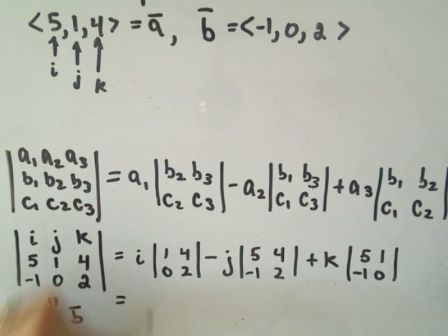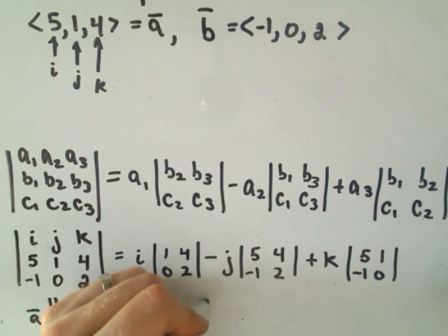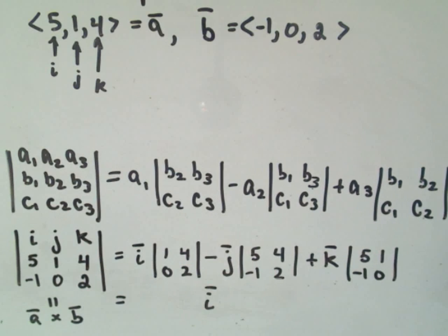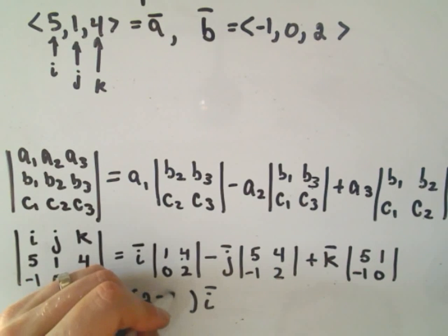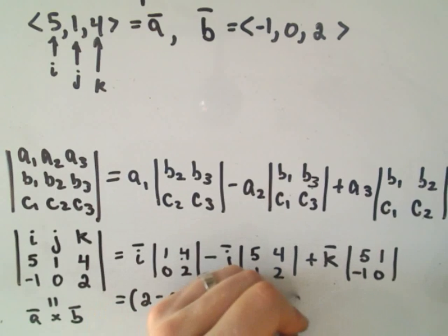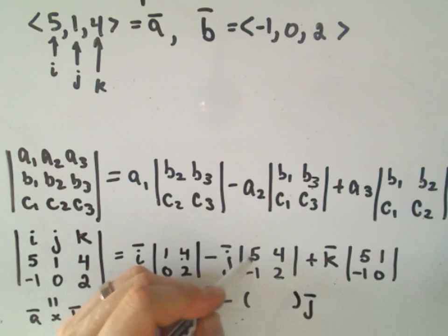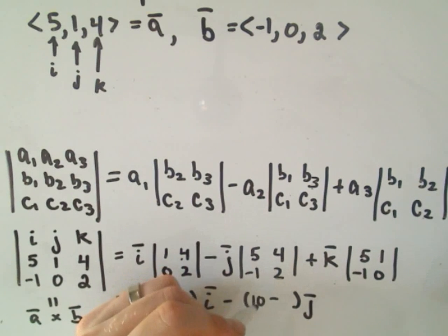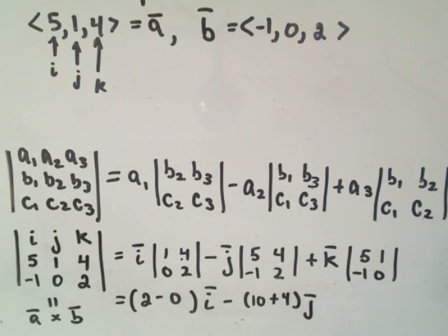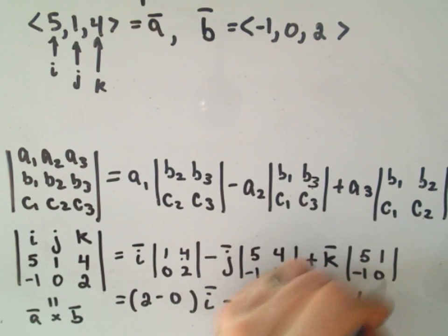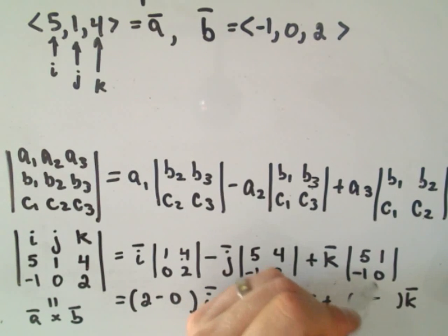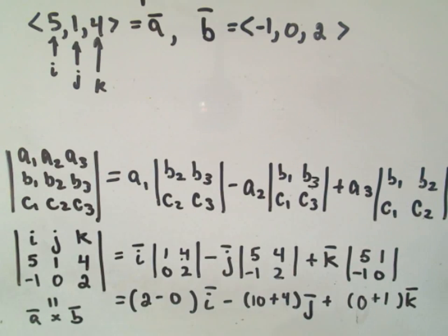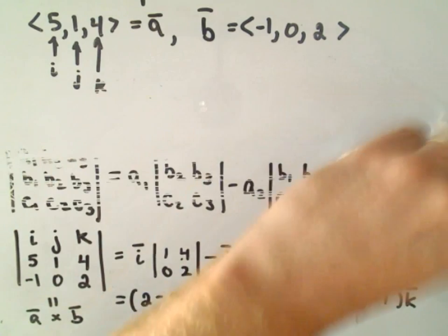And now we just have to compute this determinant of this little 2 by 2 matrix. So, I'm going to put my I out at the end. So it says we'll get 1 times 2 minus 0 times 4, which is 0. So then we have minus our J component. So we take 5 times 2, which is 10. And then we have to subtract away negative 4. So that'll turn into positive 4. And then we have our K component. So it says we take 5 times 0, which is 0, minus 1 times negative 1, which is going to give us positive 1.